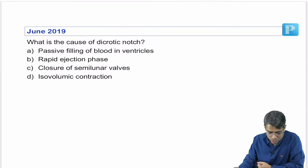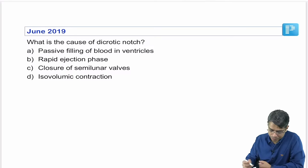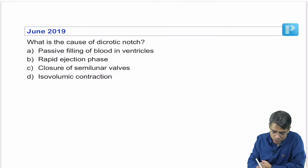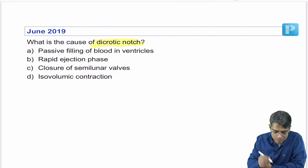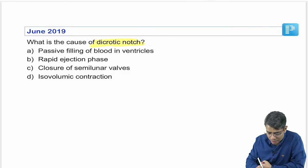Next question: what is the cause of the dicrotic notch? The dicrotic notch is found at the level of the aortic pressure waveform.